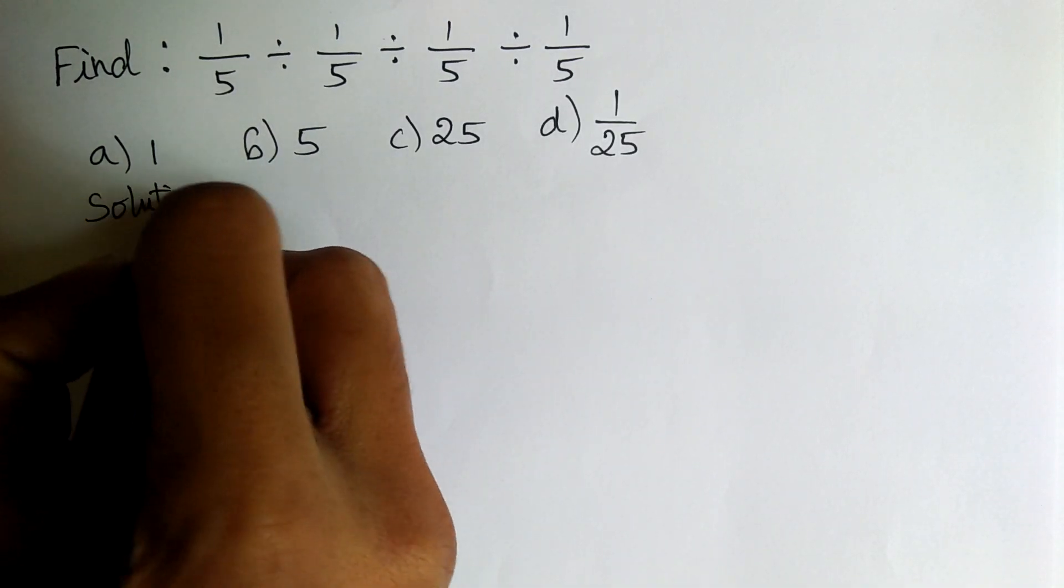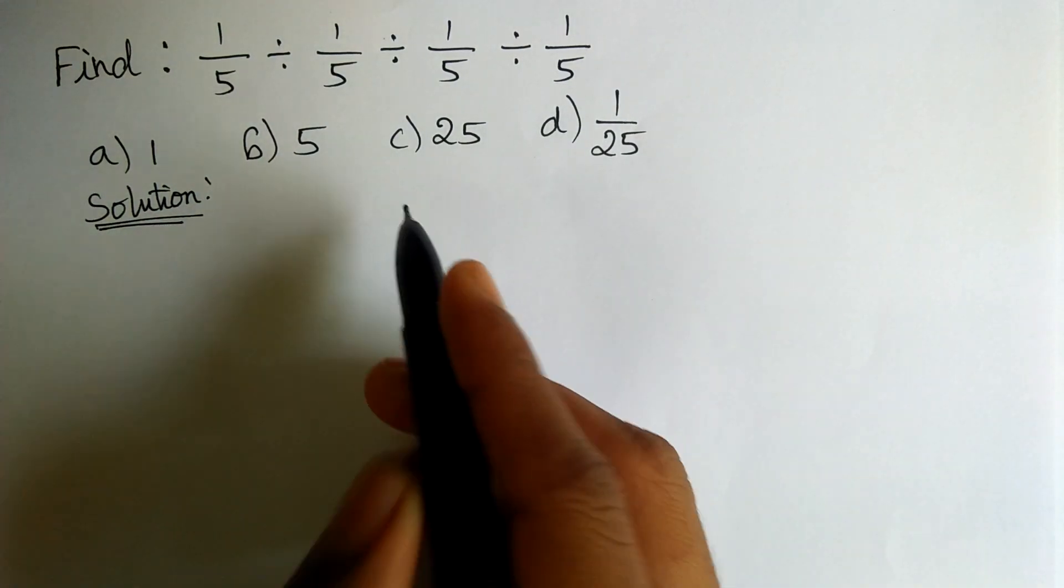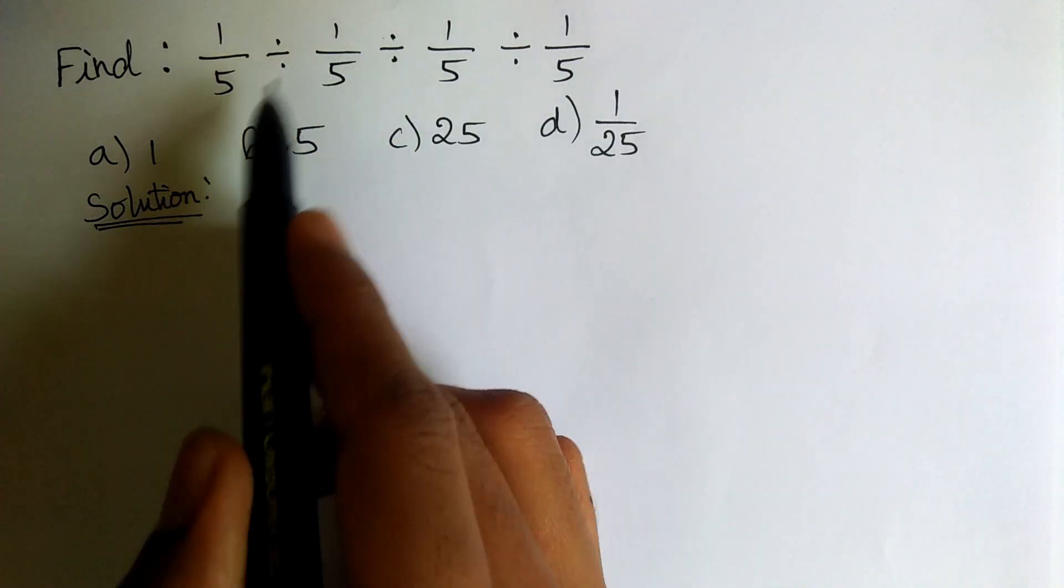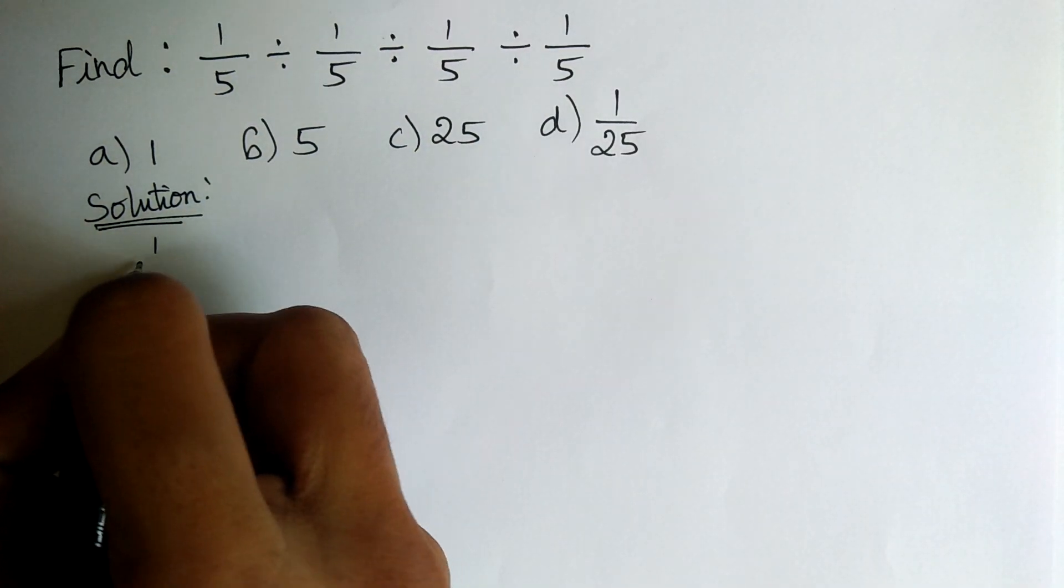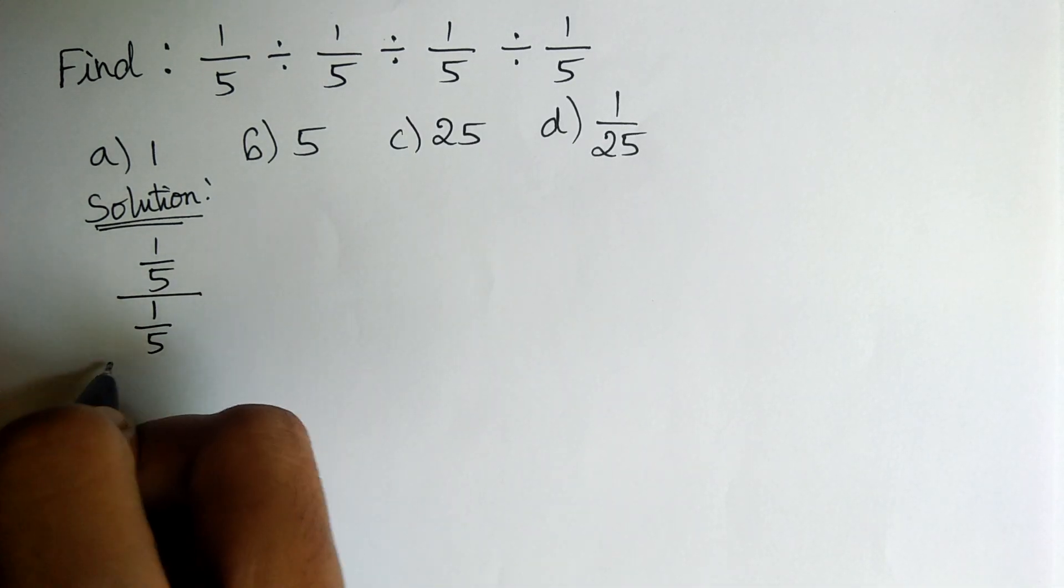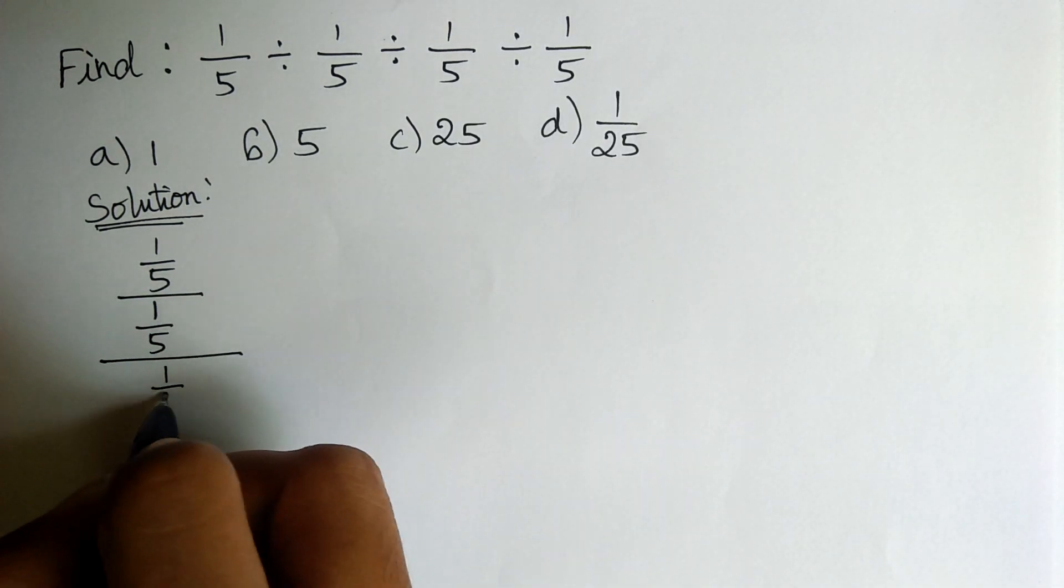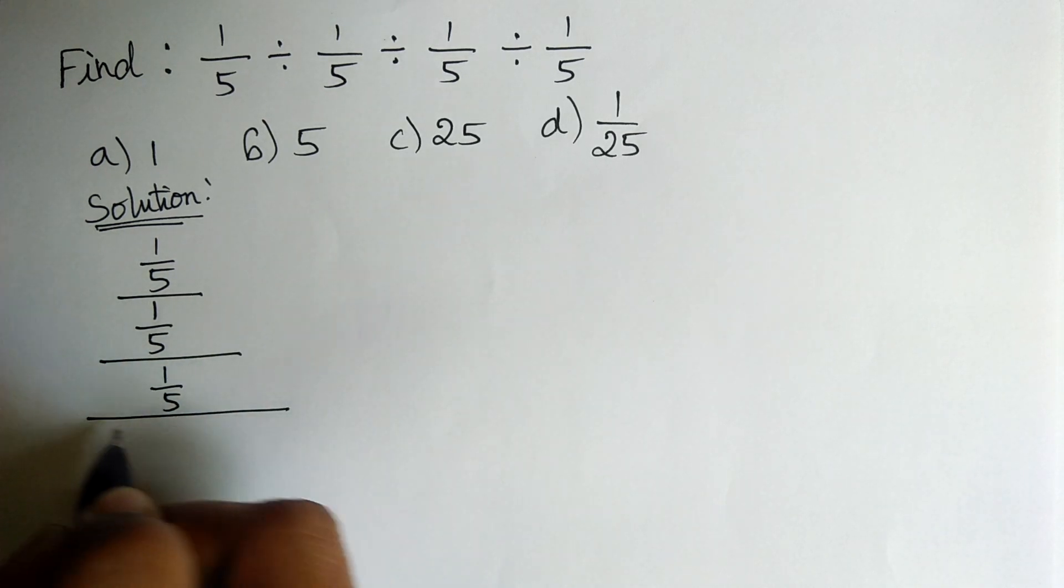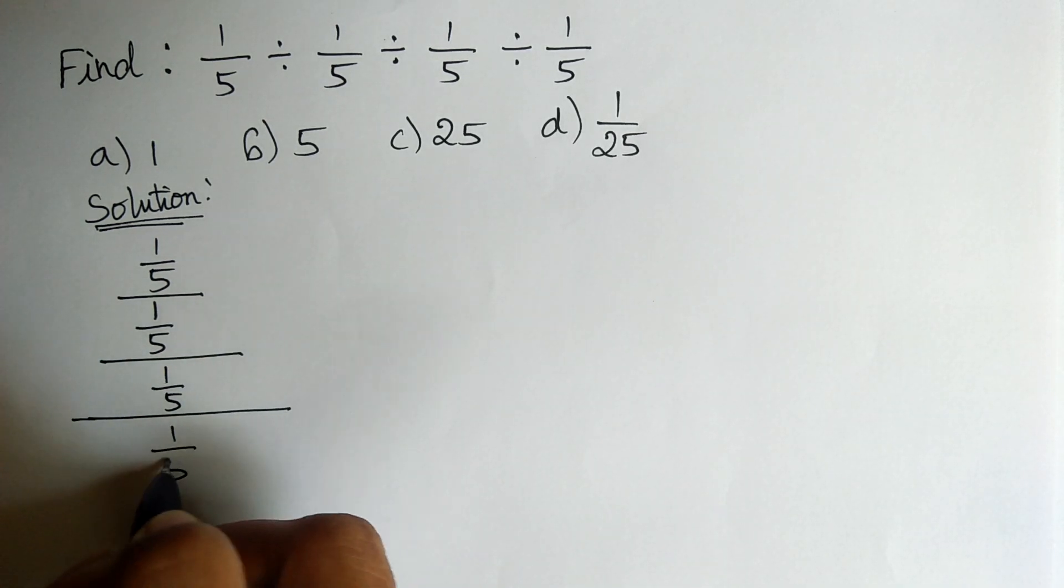Let's go to the solution. The original form of this equation is 1 by 5 divided by 1 by 5 divided by 1 by 5, the whole divided by 1 by 5.